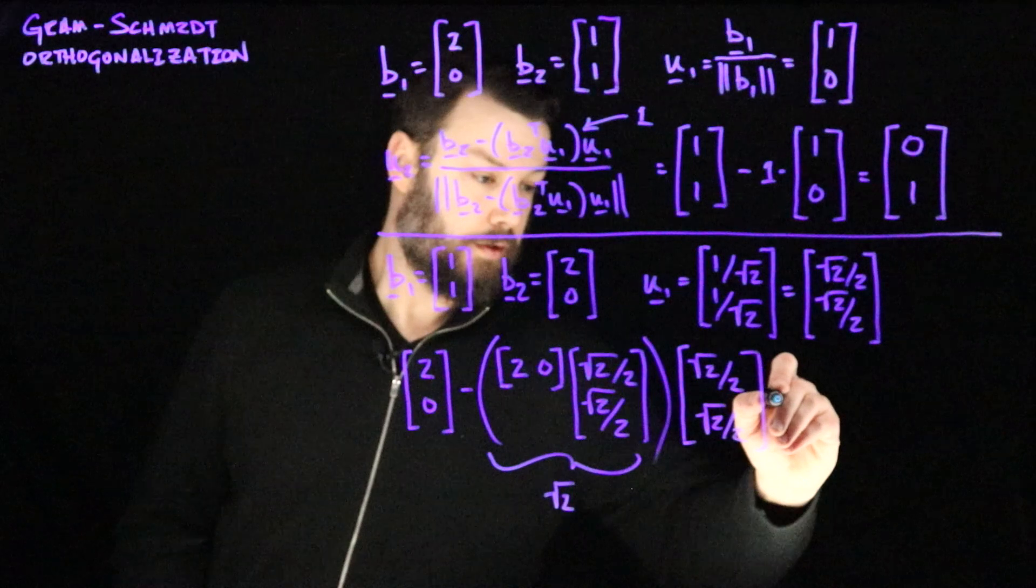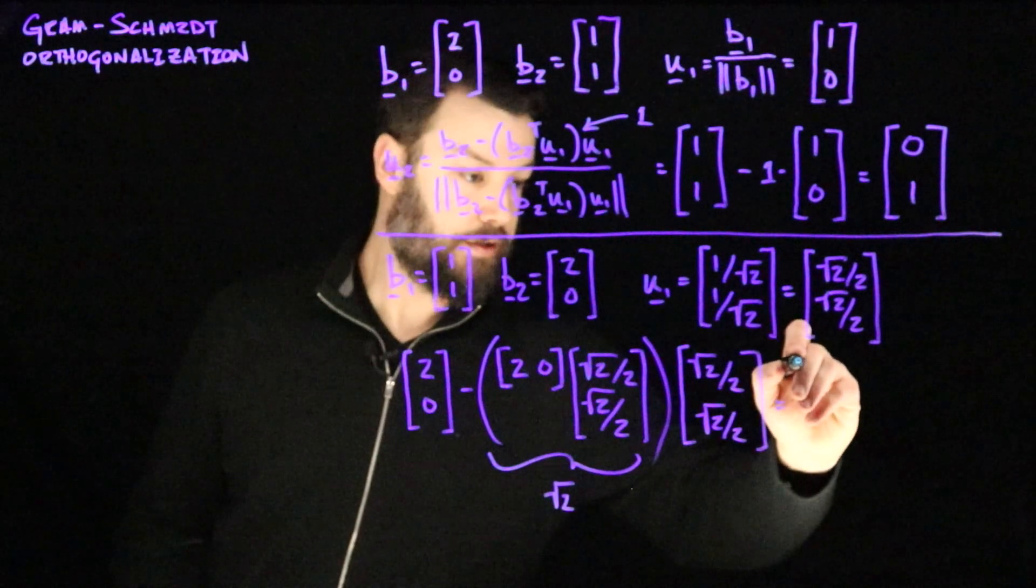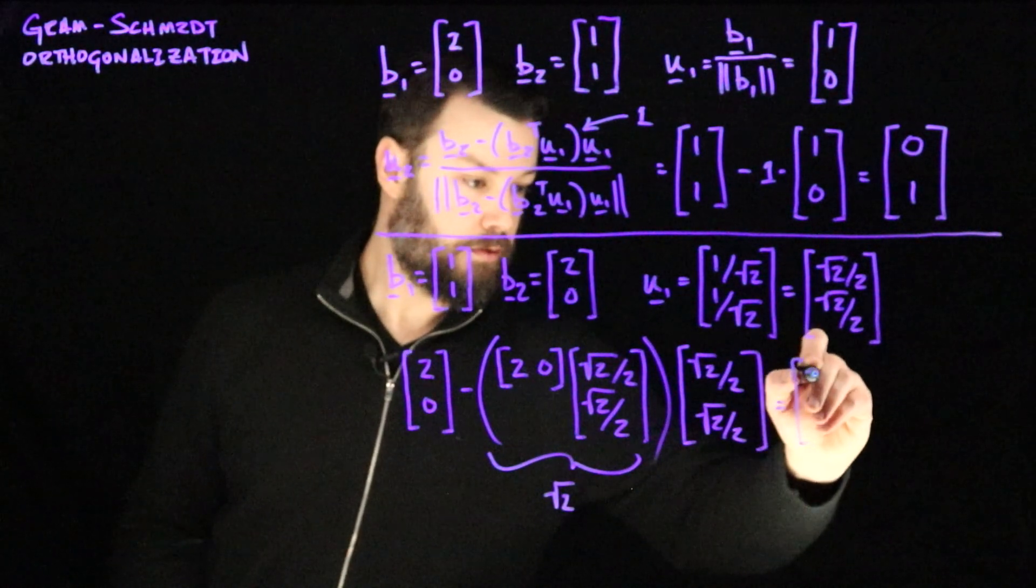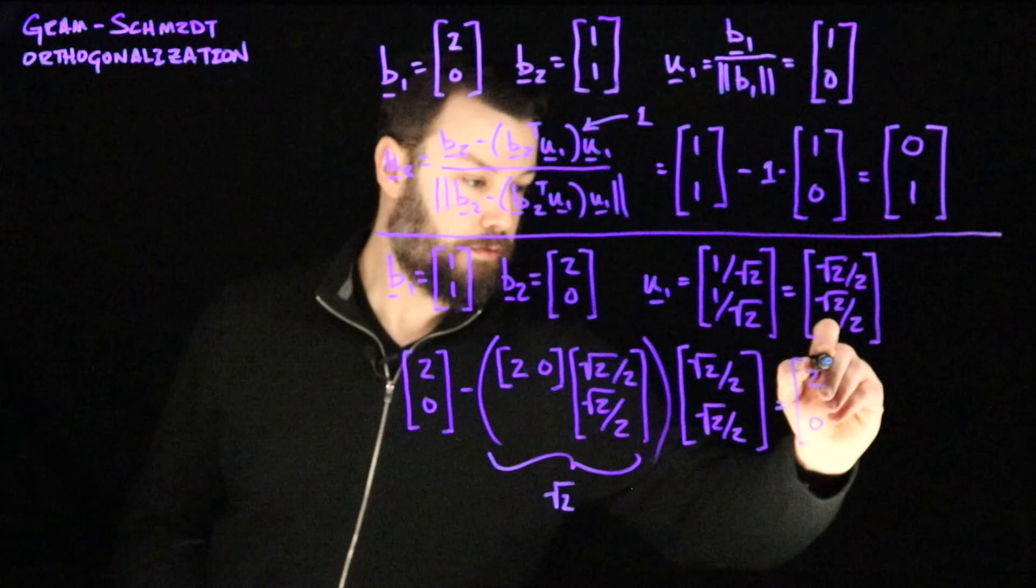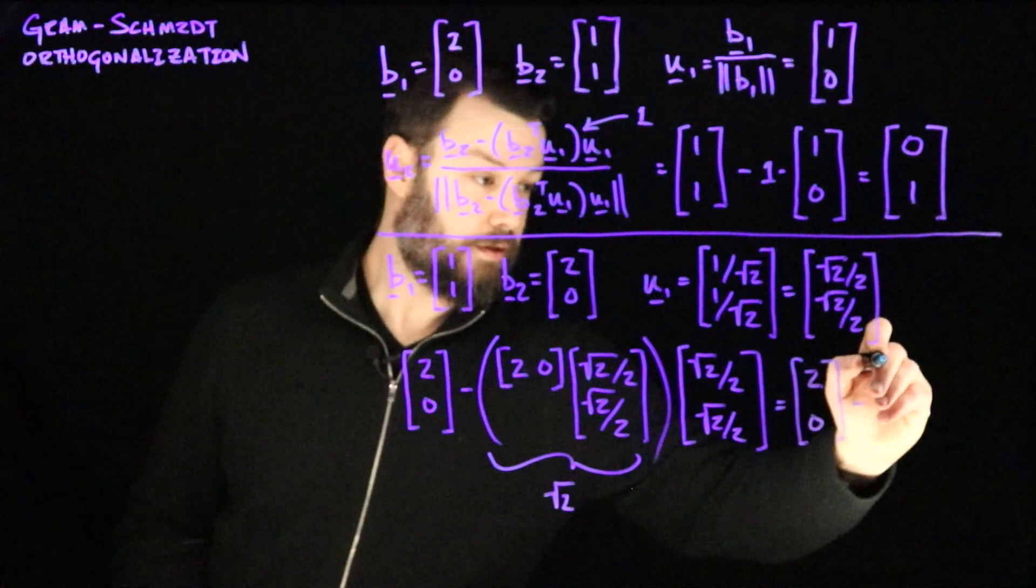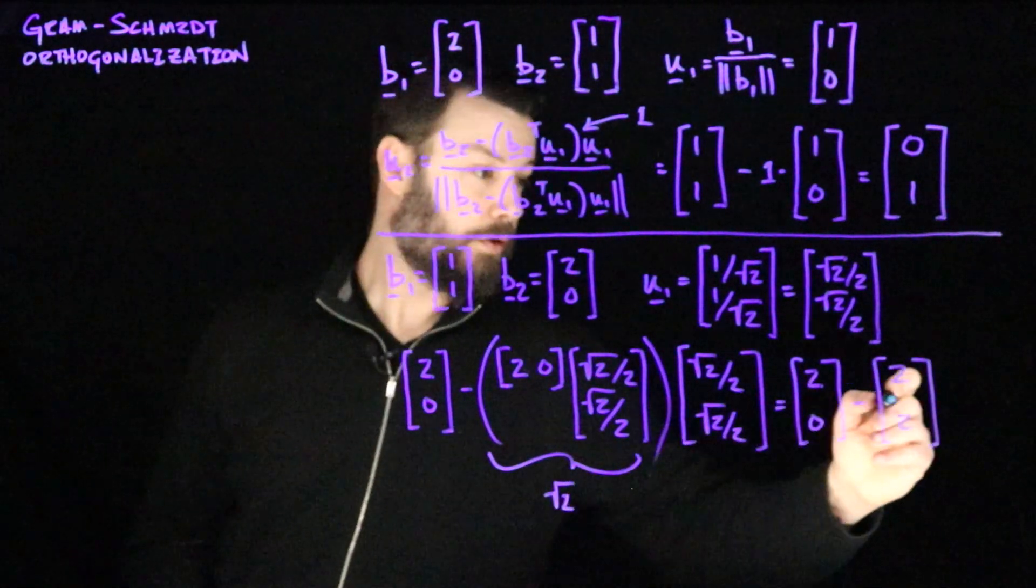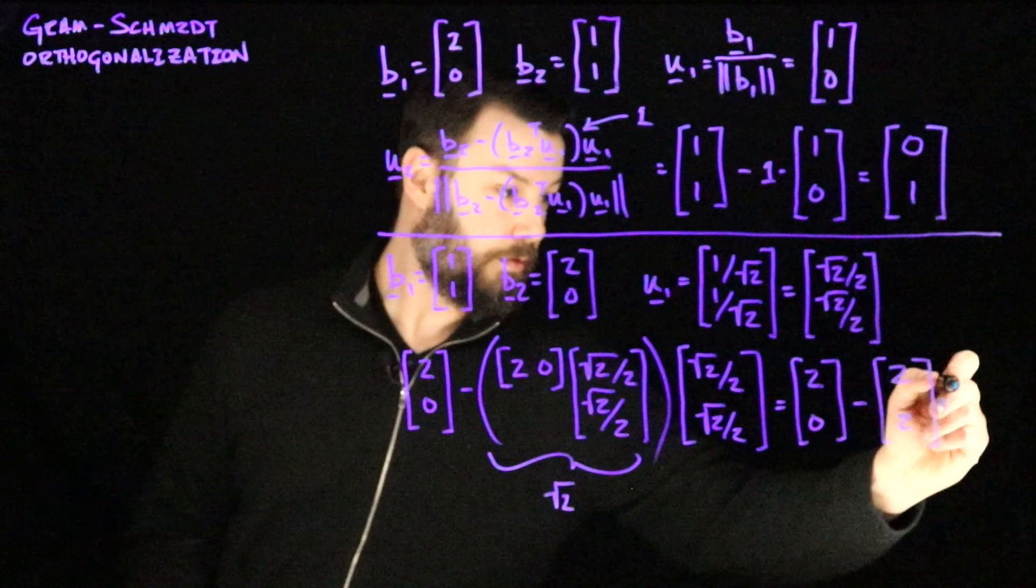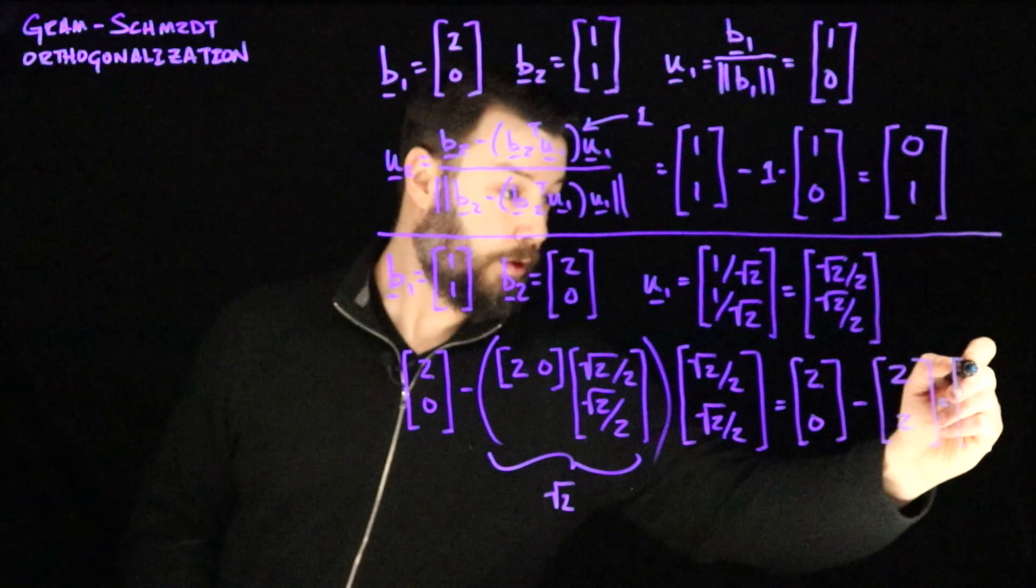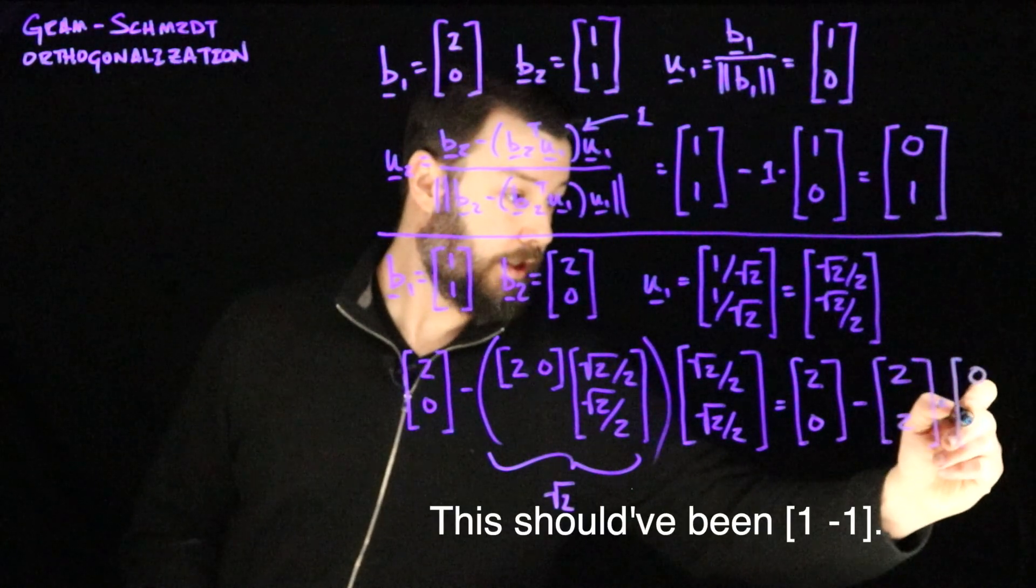So now root 2 multiplied by this vector gives us 2 over 2 and 2 over 2. So we wind up in the situation where we have 2, 0, minus 2, 2. So of course, this is equal to 0, negative 2.